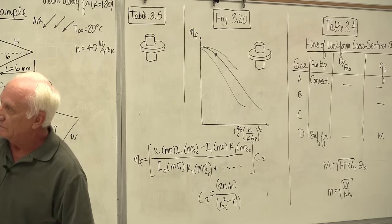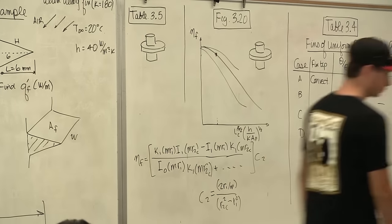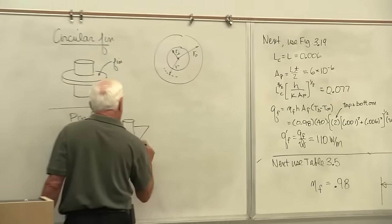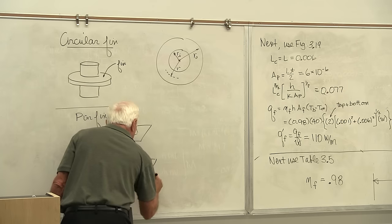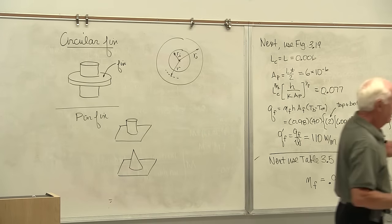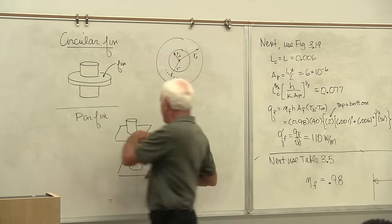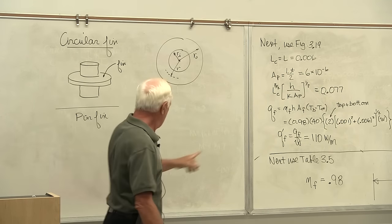For circular fins, use Figure 3-20 or Table 3-5. For pin fins — a cylindrical pin fin of uniform cross-section can use Table 3-4, since slicing it at any radius gives pi-r-squared consistently. A tapered pin fin cannot use Table 3-4. Table 3-5 has equations for both types of pin fins.